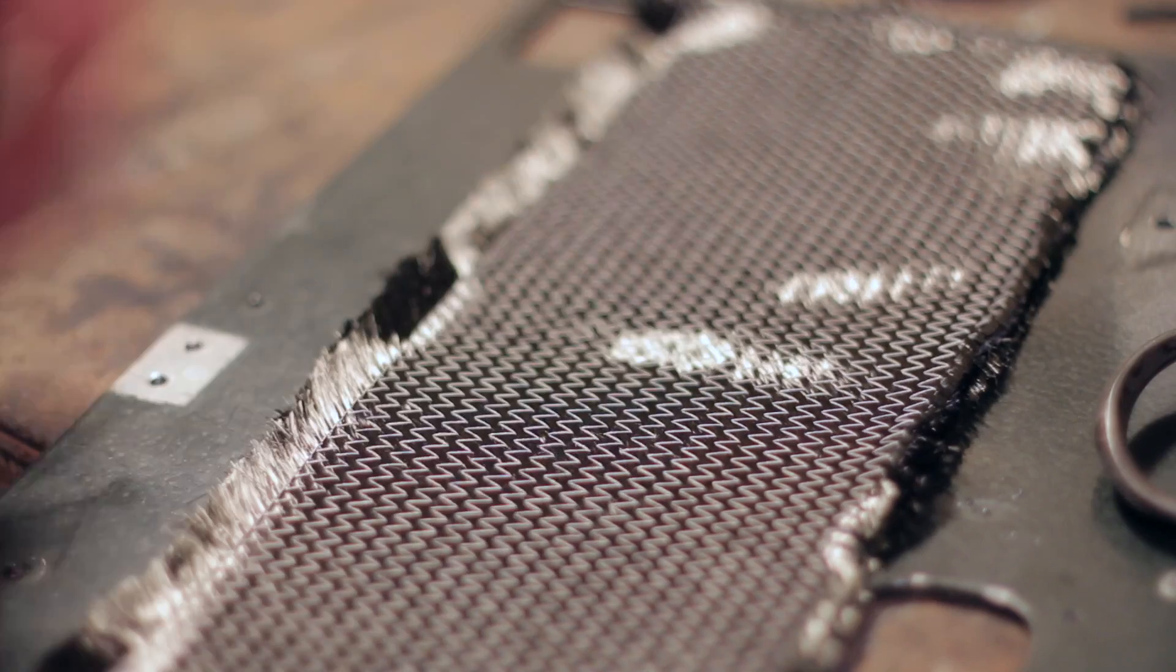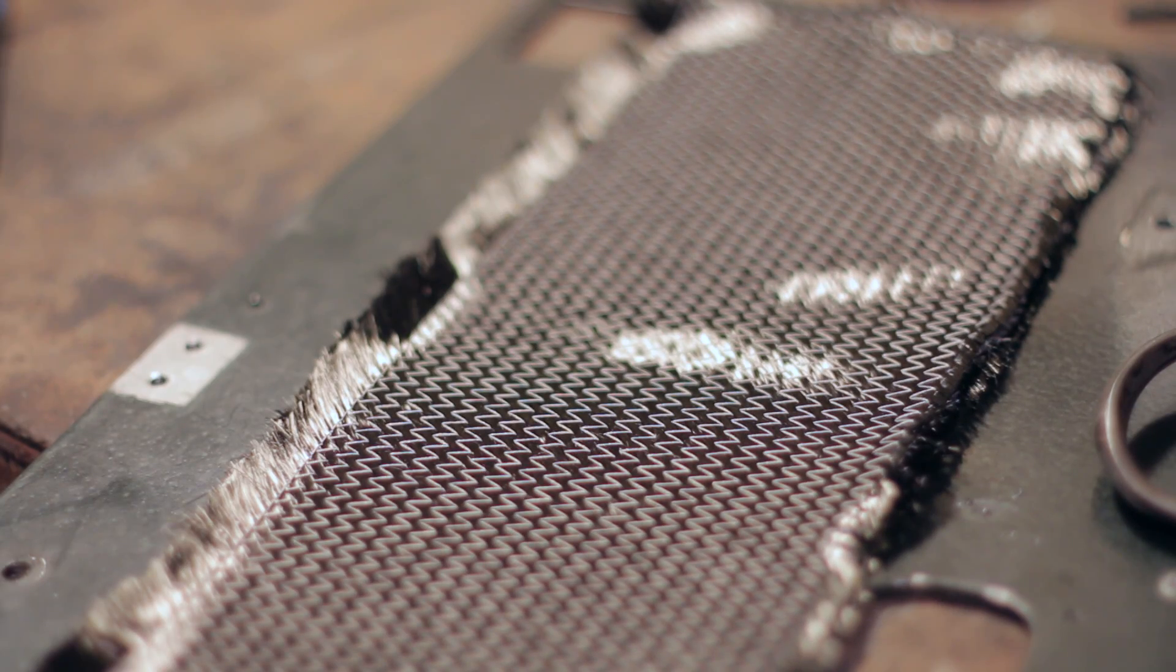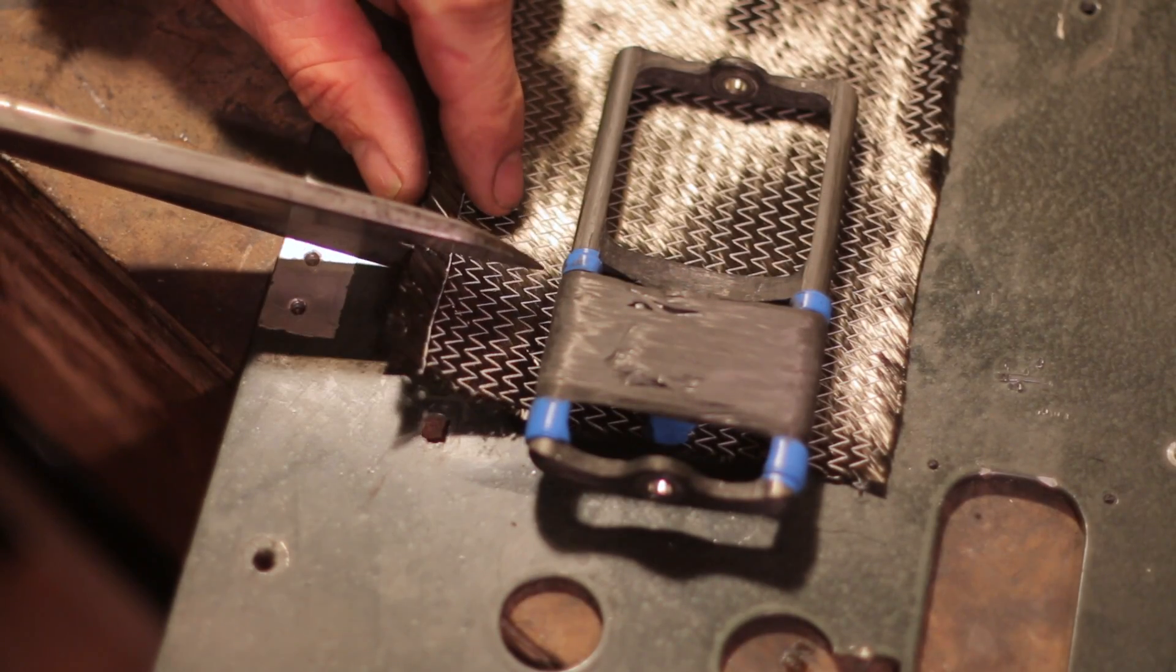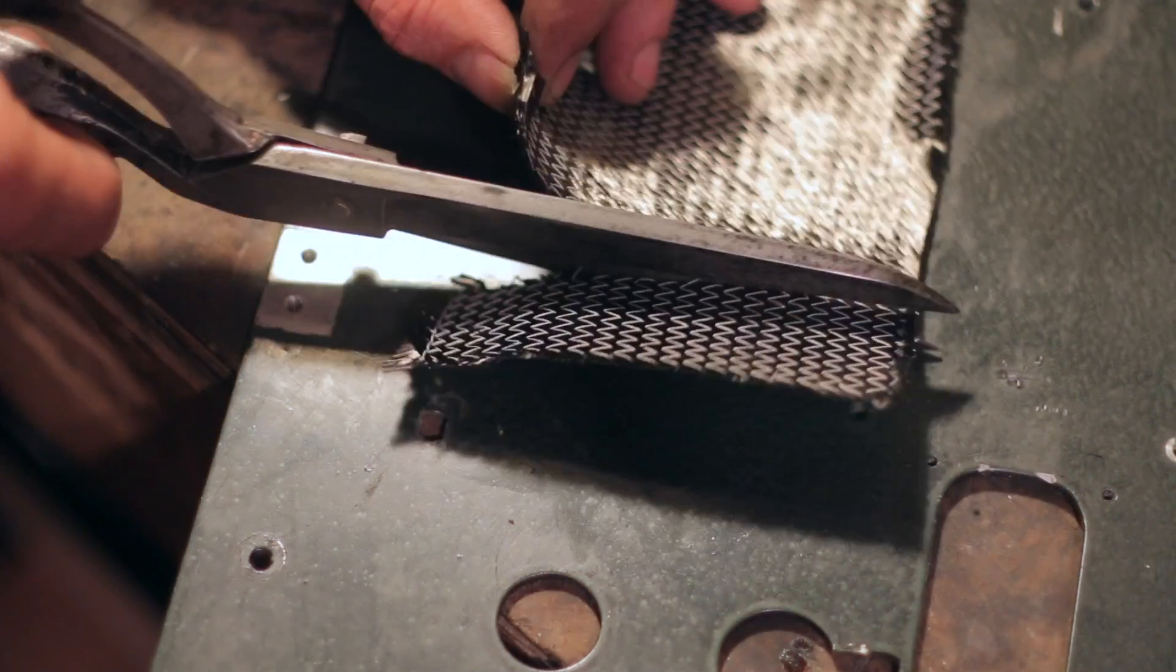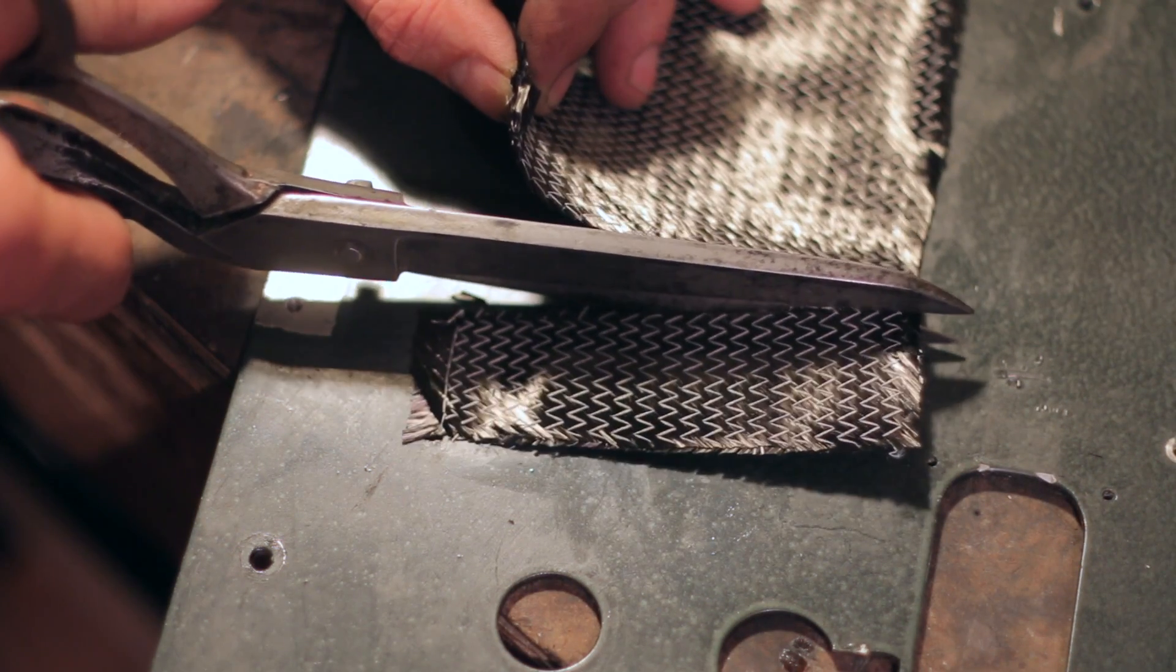The platform was still in a weak state at this stage, so I needed to add some strength. Here I'm preparing to add a layer of double bias. It's very strong.